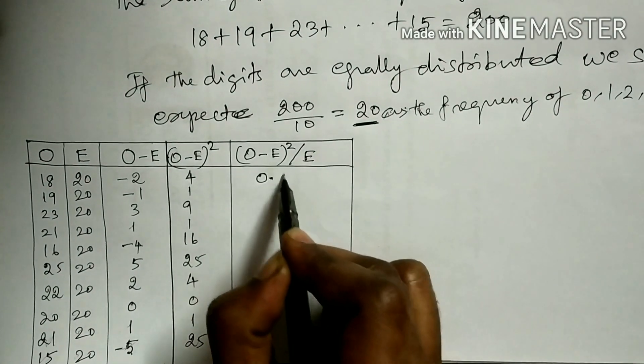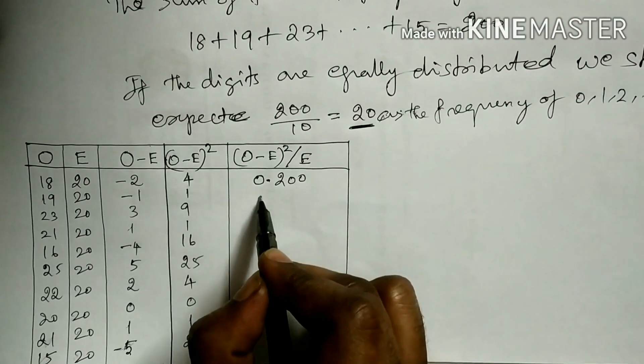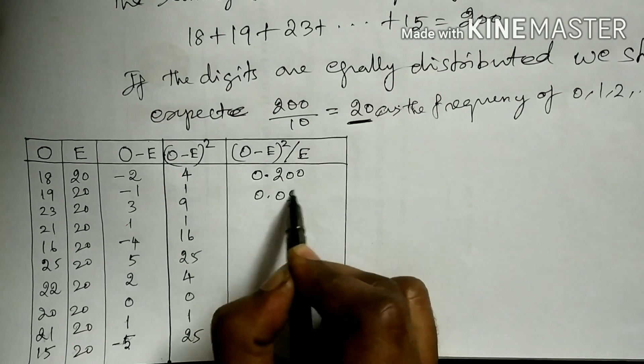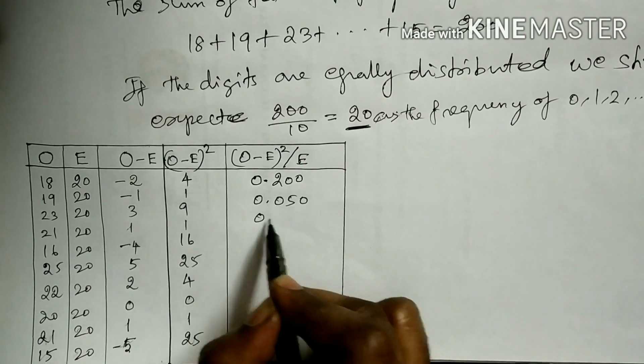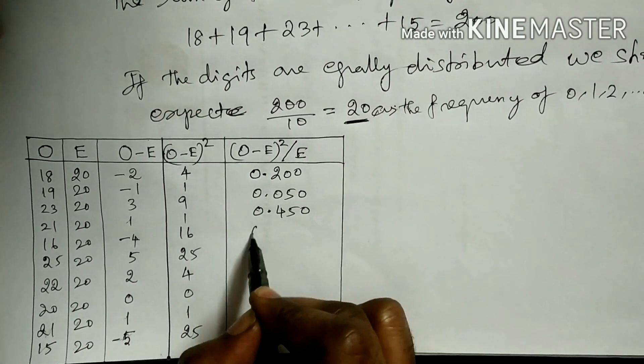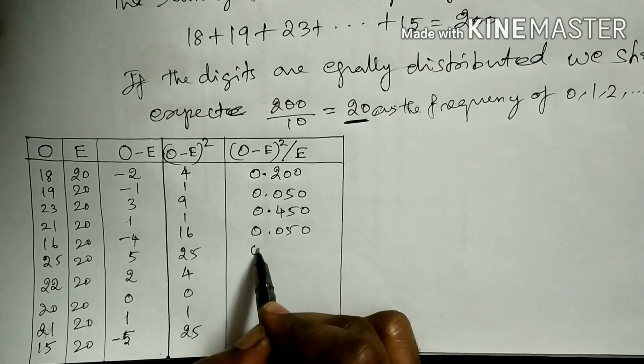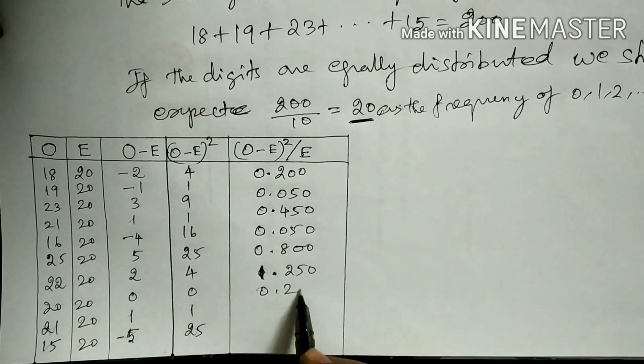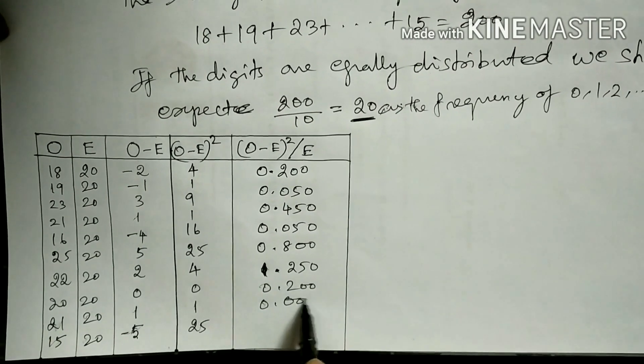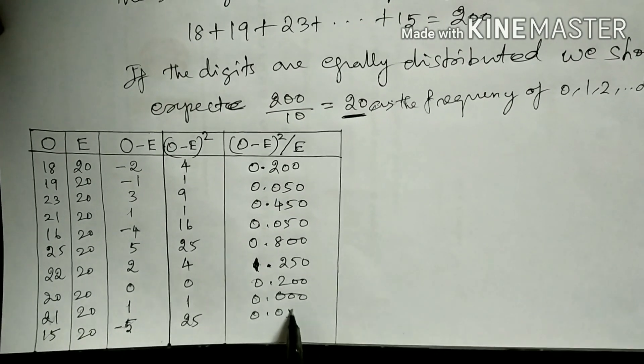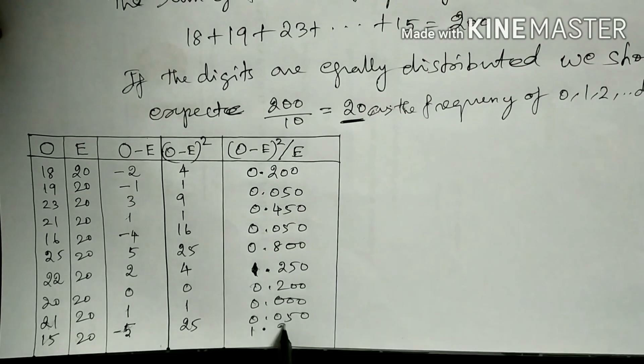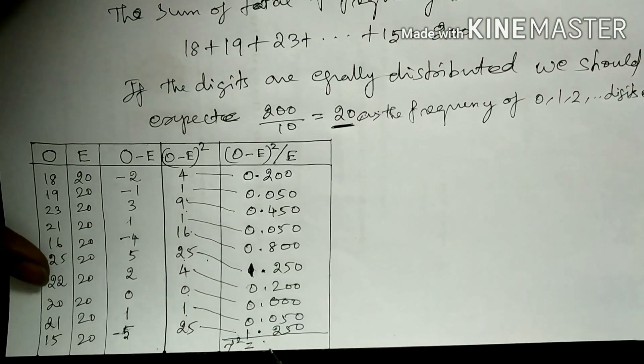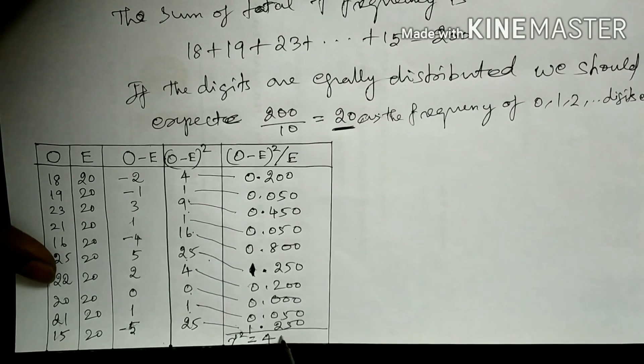Once you do that, we will get 0.200, 0.050... Just sum them up. We are getting 4.30.